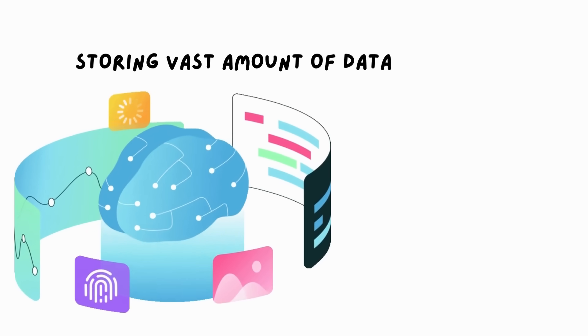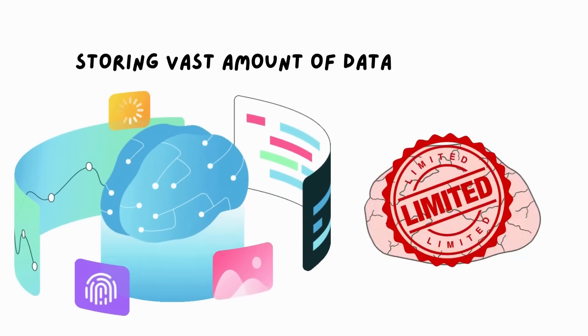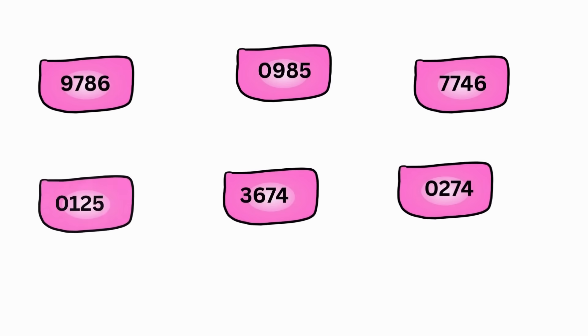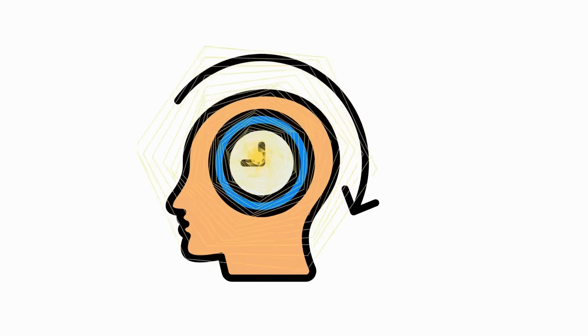While the human brain is capable of storing vast amounts of data, working memory is quite limited. So, it uses something known as chunking, which is where large amounts of information are stored in smaller groups, or chunks, rather than individually, to maximize short-term memory.